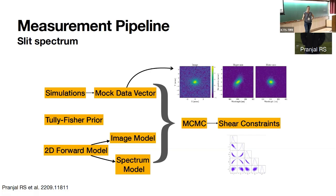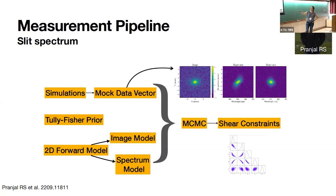That sounds great in theory — let's get closer to data analysis and figure out how well we can do in practice. I'll take you through the measurement pipeline and shape noise estimate that Prangel has set up. This starts with realistic simulations where we put in a known shear and specify the instrument of choice. We produce an image and a major- and minor-axis spectrum. These simulations are too slow for MCMC, so Prangel developed a fast 2D forward model that produces the image and a simpler spectral approximation, allowing us to run MCMC and produce a shear constraint on a per-galaxy basis.